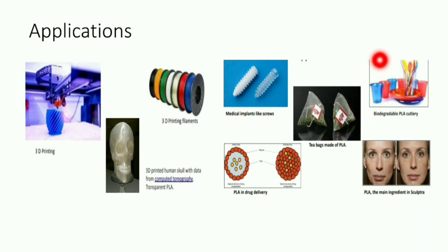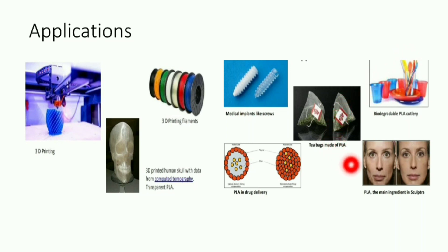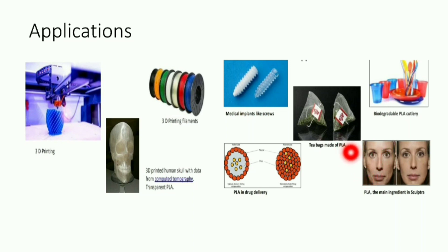Another key application is biodegradable PLA cutlery, and because it can be degraded, it can be recycled over and over again. It is also used as an ingredient in sculpture — meaning if a person has wrinkles, we can remove them by the addition of PLA. So this is the wide application of PLA.